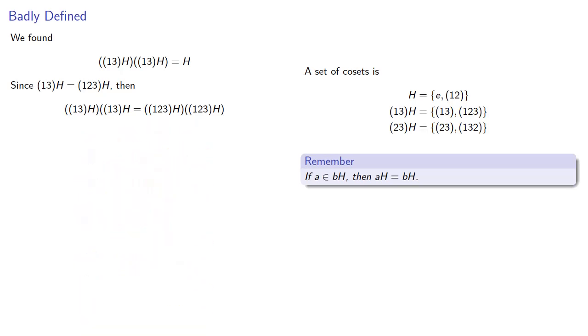And if we find this product, we get (1,3,2)H. And since (1,3,2) is in (2,3)H, then this product is (2,3)H. And since we get different results depending on which representative we use, coset multiplication is not well defined.